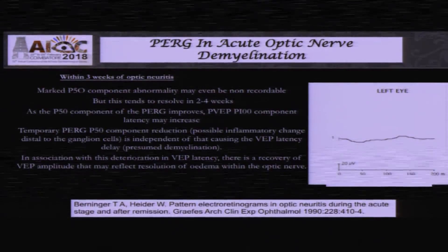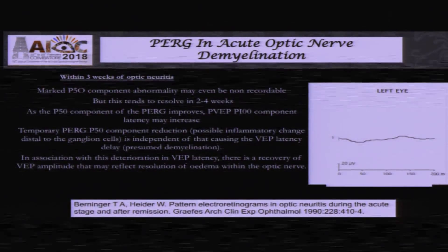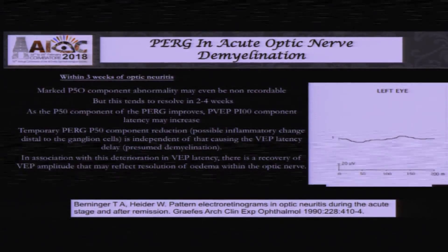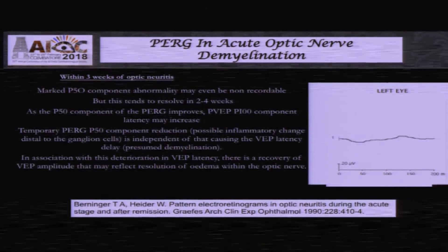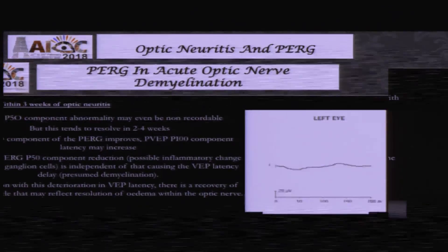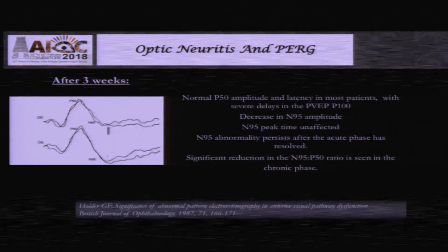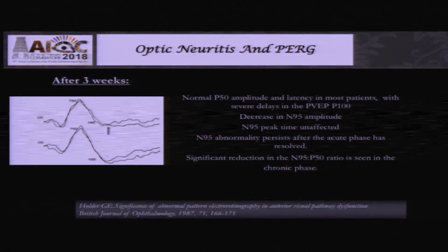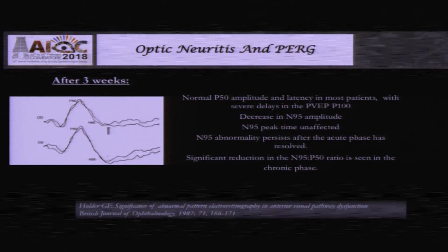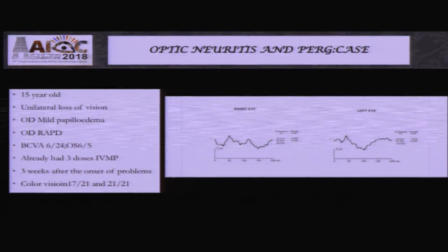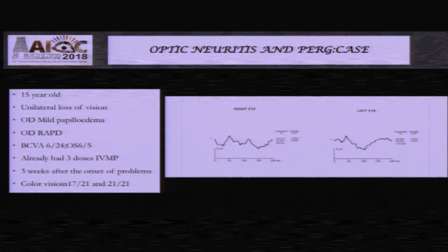To differentiate between optic nerve and macular disease, it is best to do a pattern ERG. One of the most important uses of pattern ERG is in optic neuritis. In early stages it may be totally non-recordable, but after three weeks as the pattern ERG recovers, you can see P50 has come back but N95 does not come back. The other eye shows normal findings. This is the pattern to look for in such a case.